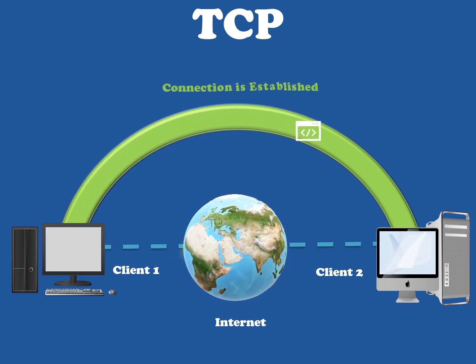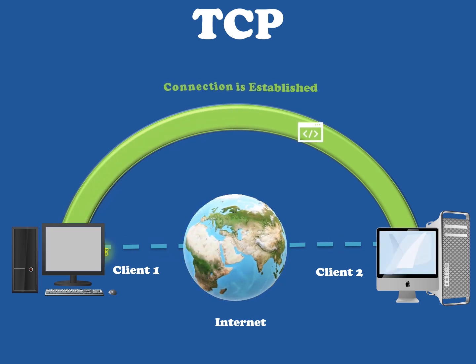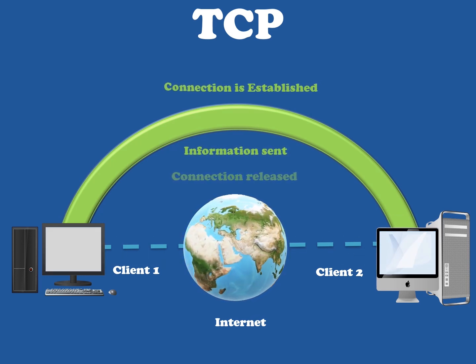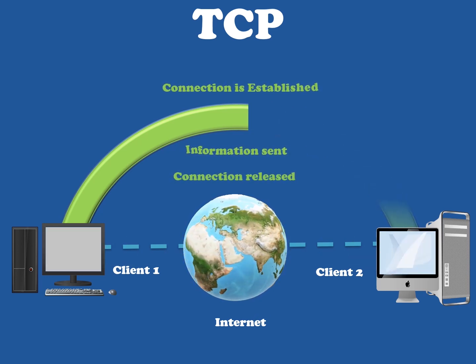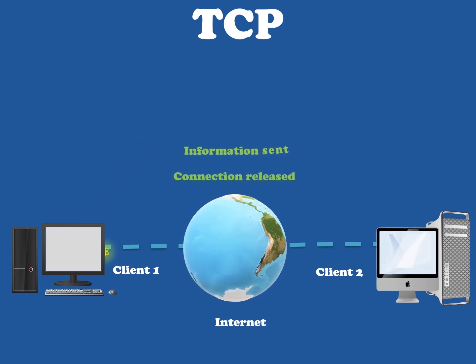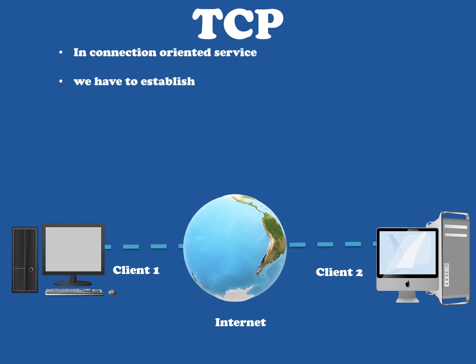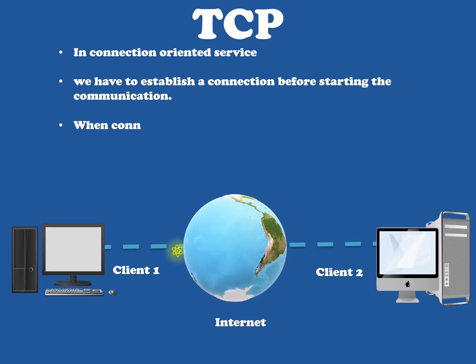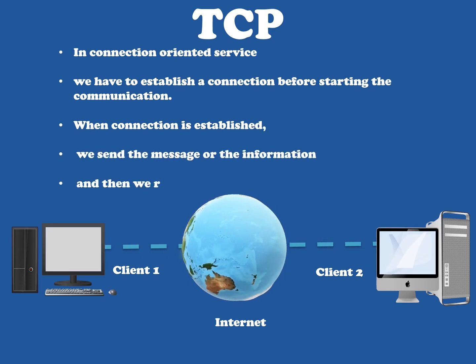We can send data in connection-oriented service even if there is a fault at the receiver's end. An example of connection-oriented service is Transmission Control Protocol. We have to establish a connection before starting communication. Once the connection is established, we can send messages or information to another computer, and after finishing data communication, we release the connection.